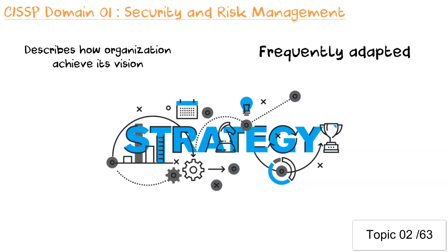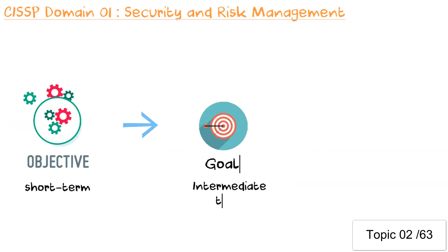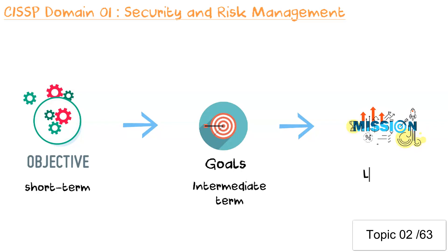Objectives are milestones or expected specific results. Objectives help to attain organization goals and achieve the mission. A goal is the intermediate term between objective and mission. So objectives are short-term and support a goal which is at intermediate term, which further supports a mission that is always long-term and can only be accomplished with a well-defined strategy.